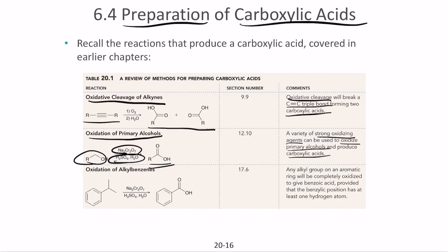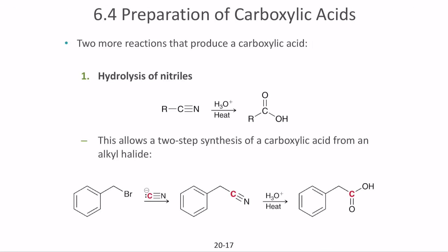The third method is oxidation of alkyl benzenes. Treating an alkyl benzene with sodium dichromate and sulfuric acid produces benzoic acid. Any alkyl group attached to an aromatic ring will be completely oxidized to give a benzoic acid product. The oxidation occurs at the benzylic position.